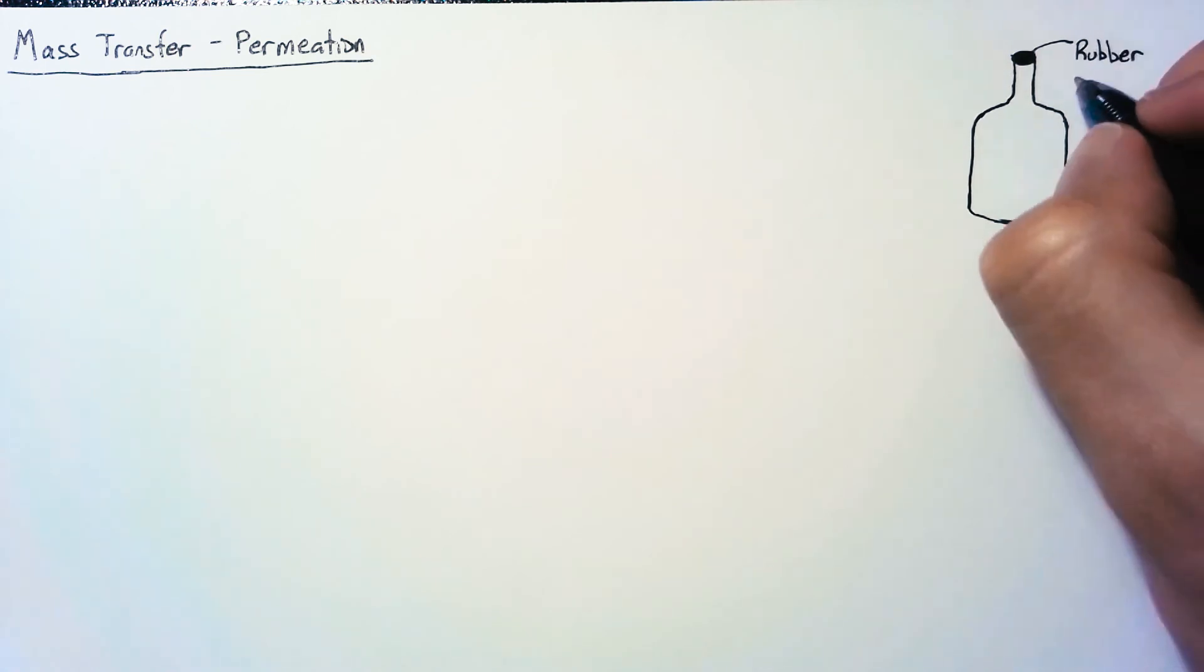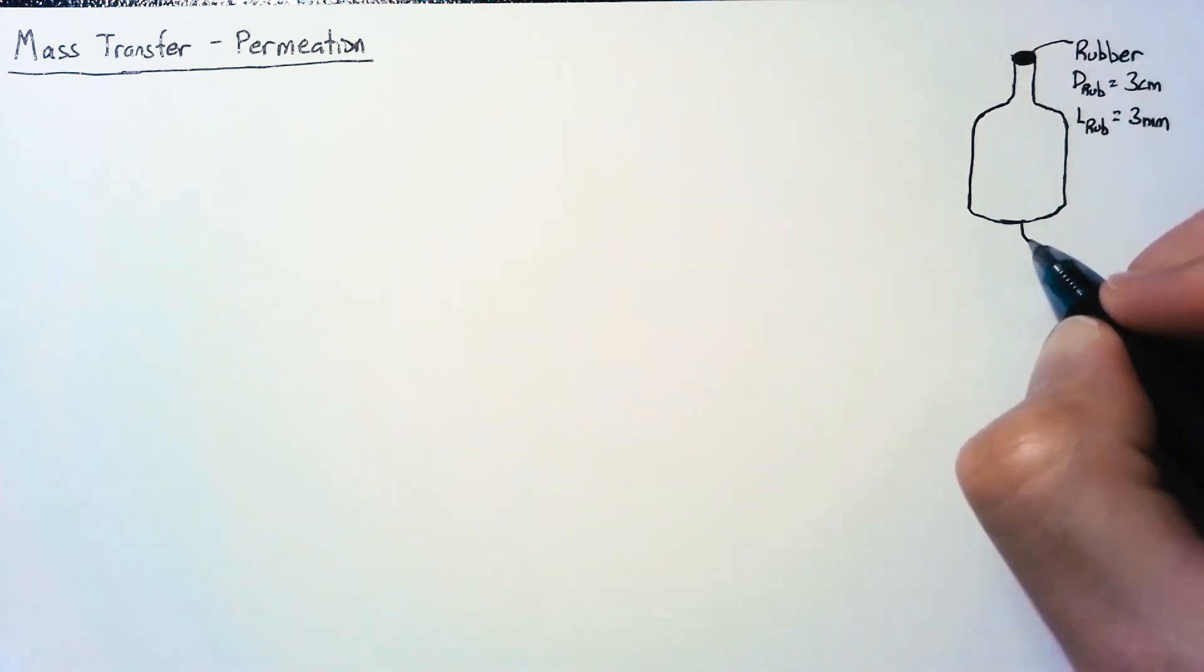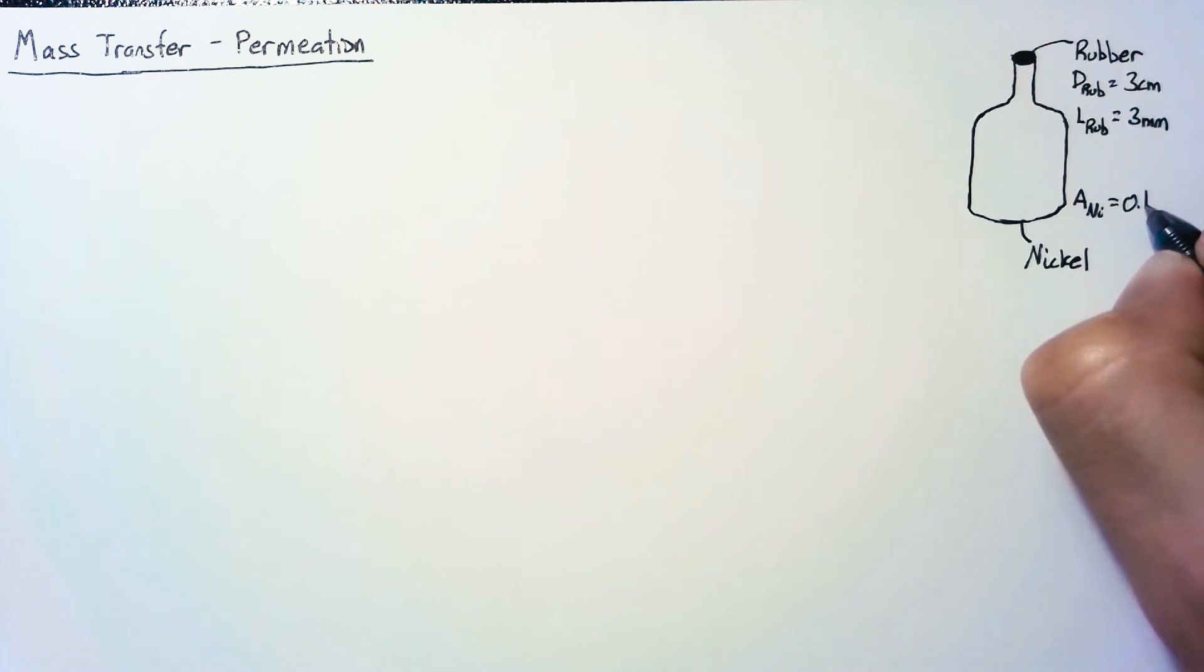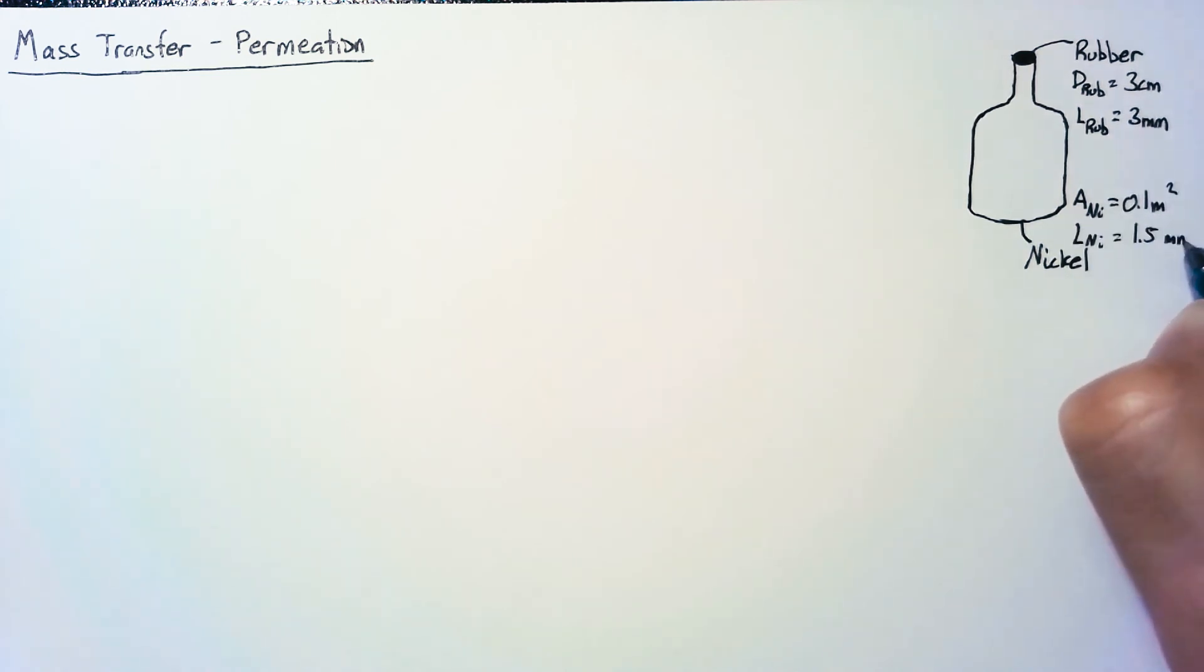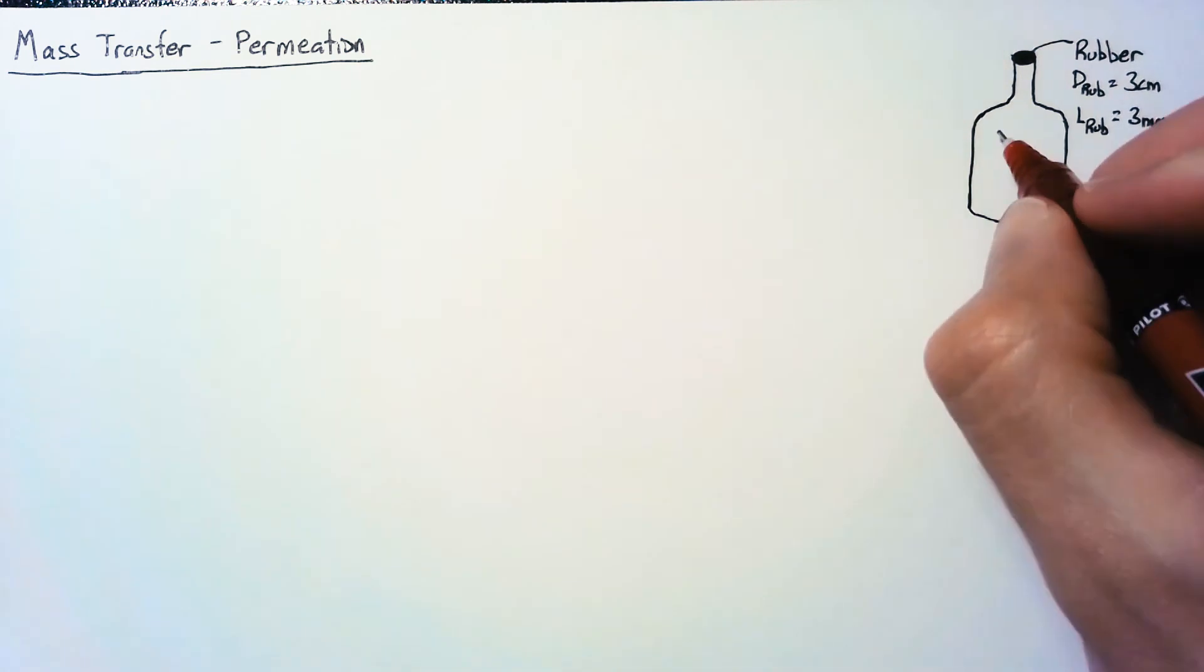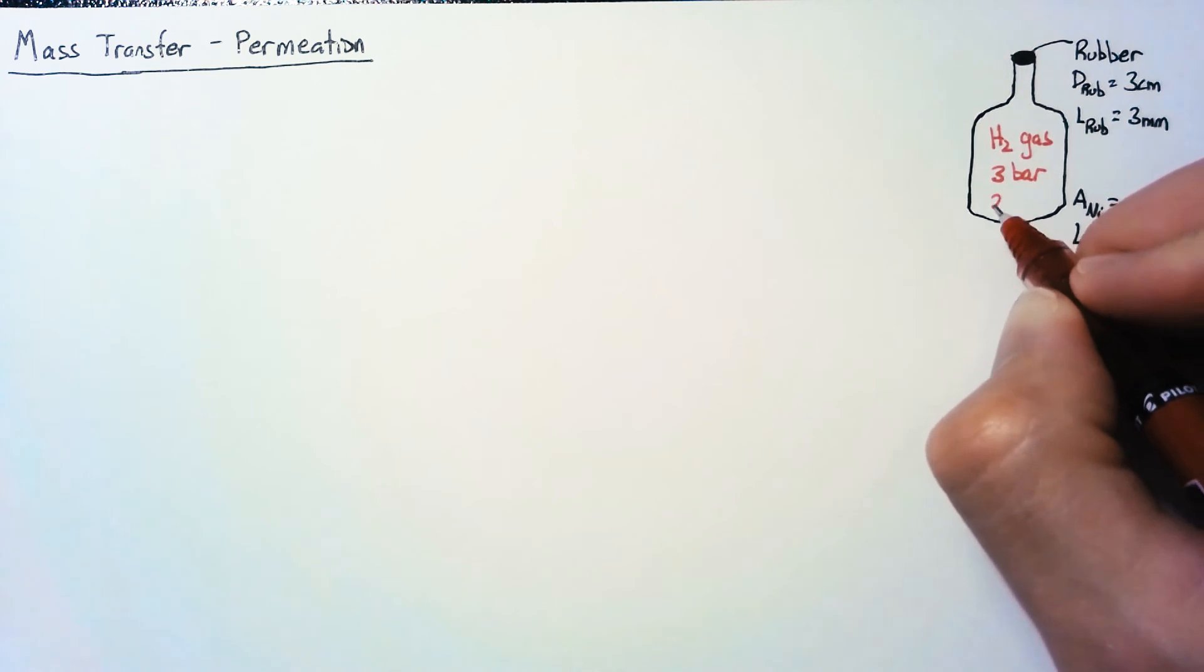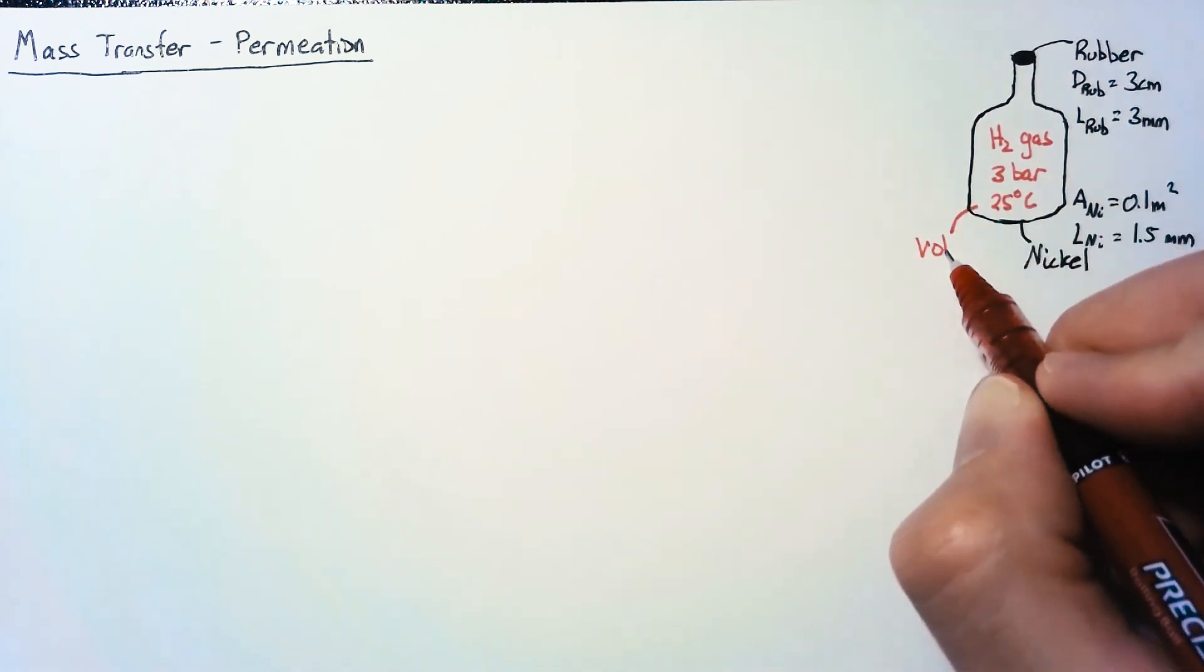Our rubber seal is going to have a diameter of 3 centimeters and a thickness of 3 millimeters. This flask is going to be made of nickel with a total area of 0.1 meters squared and a thickness of 1.5 millimeters. The gas we're holding is hydrogen at a pressure of 3 bar and 25 degrees Celsius, with a total volume of 3 liters.